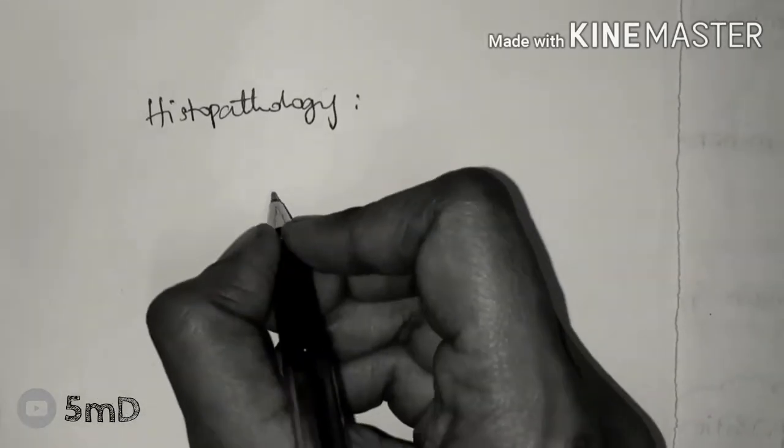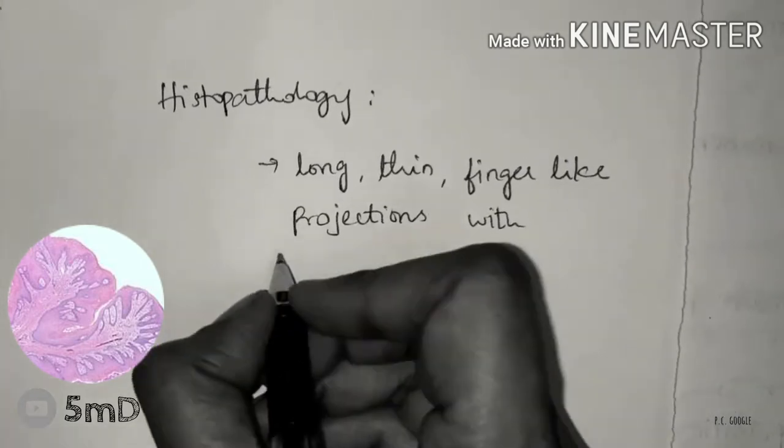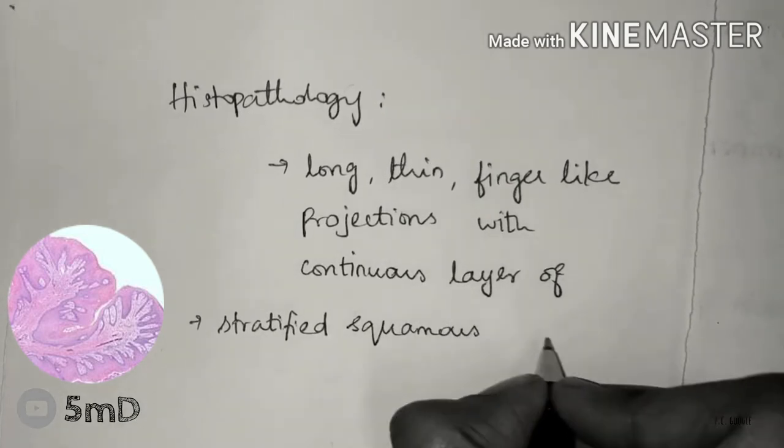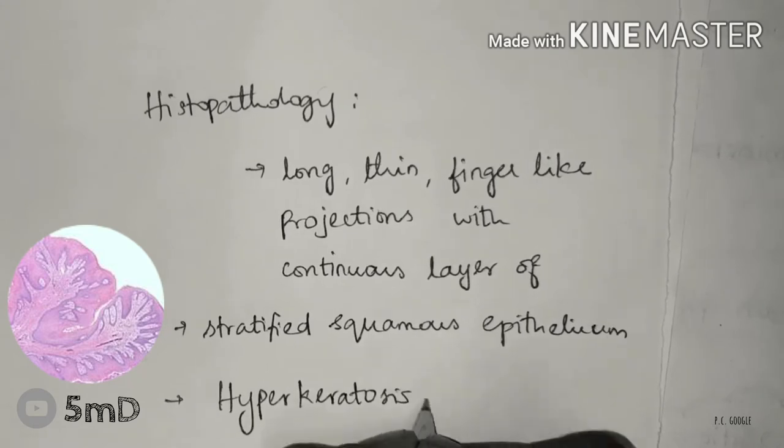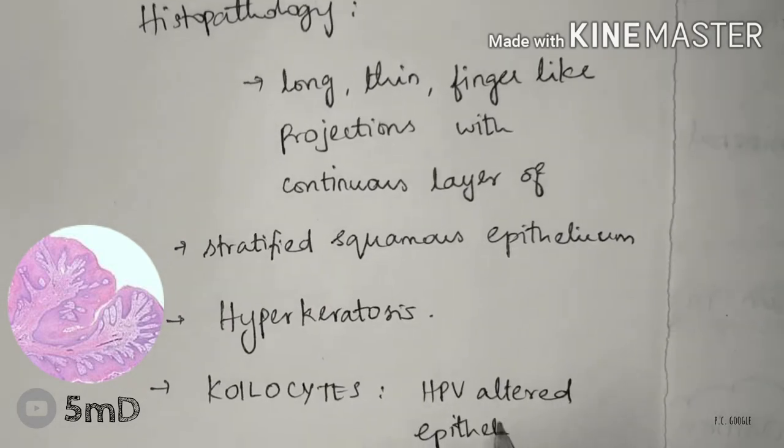The histopathological features of papilloma include many long thin finger-like projections which are characteristic of papilloma, continuous with layers of stratified squamous epithelium, and thin central connective tissue core is present. Hyperkeratosis can be seen due to frictional irritation.